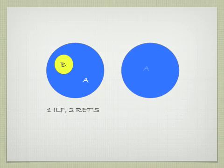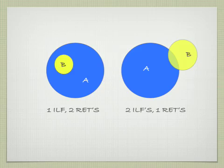In this case, we have a file, A, two ILFs, one record type each.